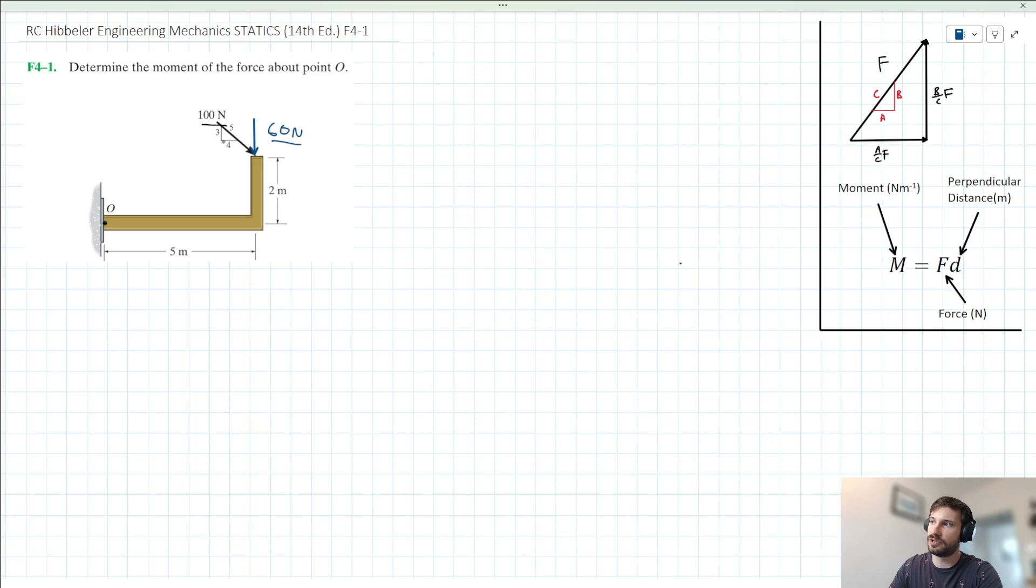The reason that this is 60N is because 60 is 3 fifths of 100, right? And the horizontal component here is going to take a value of 80. So let's just add that to our diagram here. We've kind of decomposed this 100N force here. Let's just scribble it out so that we're just working with our 60 and our 80 horizontal and vertical components here.